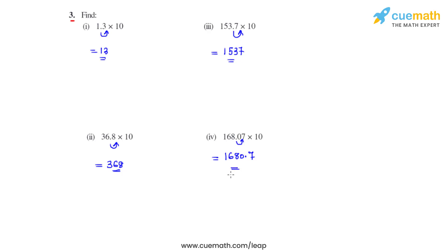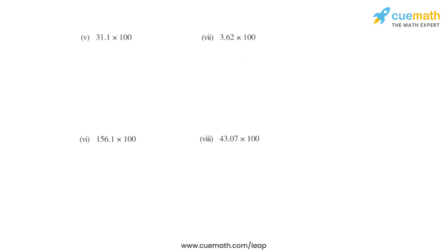Moving on to the next set of bits. In the fifth bit we have 31.1 multiplied with 100, so there are now two zeros, so the decimal will be moving two places towards the right. As there is no digit after moving the decimal by two places, we can add a 0 there. So the answer for the product of these two numbers is 3110.